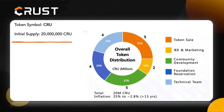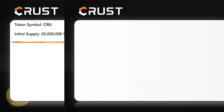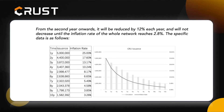The tokens generated by the block have rewards every cycle. The total distribution method is shown in the chart. From the second year onwards, it will be reduced by 12% each year and will not decrease until the inflation rate of the whole network reaches 2.8%.